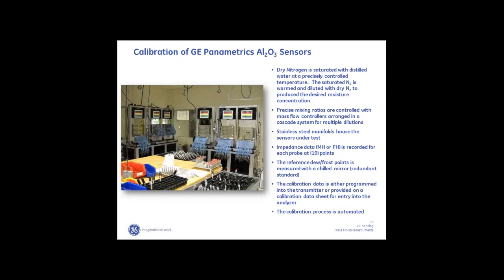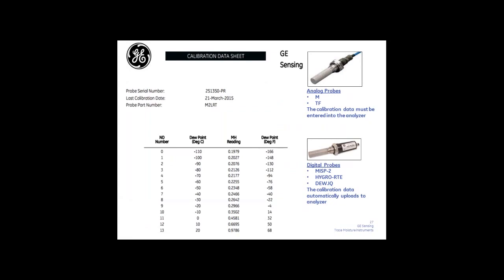As a customer, you have access to your calibration data online at any time — just register, enter the serial number, and download the calibration data for your probe. We have five of these calibration banks in our facility in Boston, as well as banks in Shannon Ireland and other countries including Japan, China, Australia, the Middle East, and South America. When you receive a probe, you're given a table of MH — our nomenclature for the impedance value — versus dew point. For an analog probe, you enter this 14-point table into the analyzer; for a digital probe, the data is automatically uploaded when you plug the probe in. If you send a probe back for calibration and it's analog, you'll need to enter the new data when it returns.